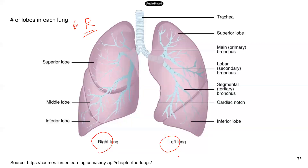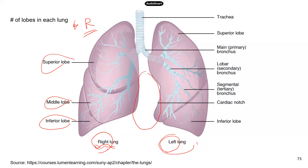Now you need to know the number of lobes in each lung. For the right lung, there are three lobes: superior lobe, middle lobe, and inferior lobe. You don't need to know the specific names — just know that there are three lobes in the right lung. And you have two lobes in the left lung. So the left lung is going to be a little bit smaller than the right one, because in the space called the mediastinum is where the heart is located. More than half of the heart is on the left side, so it takes up a little bit of space.